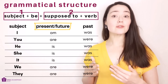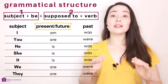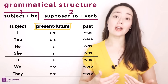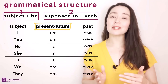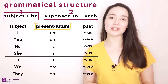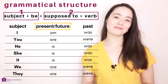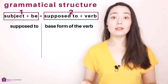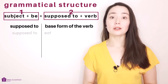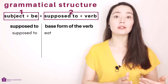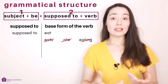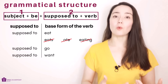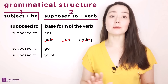Present and future? For today's phrase, we can use the present 'be' form — as in 'I am,' 'you are,' etc. — to speak about the future. I'll give you lots of examples. 'Supposed to' plus verb — I mean the base verb. 'I am supposed to eat.' Not 'eats,' not 'ate,' not 'eating.' Supposed to go. Supposed to want. Use the base verb with all subjects.